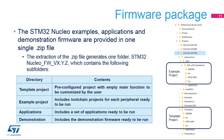Once unzipped, the file containing the Nucleo project examples has a directory named Nucleo-G071-RB. This directory contains the projects that can be run on the Nucleo-G071-RB board. These projects are ready to be run. The template project subfolder contains pre-configured projects with an empty main function. The example project subfolder includes toolchain projects for each peripheral. The application subfolder includes a set of applications. The demonstration subfolder includes the demonstration firmware.